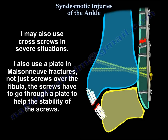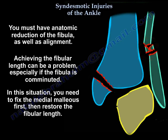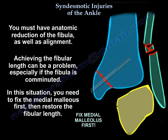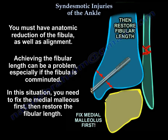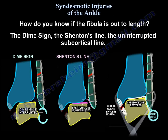The screws have to go through a plate to help the stability of the screws. You must have anatomic reduction of the fibula as well as alignment. Achieving the fibula length can be a problem, especially if the fibula is comminuted. In this situation, you need to fix the medial malleolus first, then restore the fibula length. How do you know that the fibula is out to length? The dime sign, the Shenton line, and the uninterrupted subcortical line.